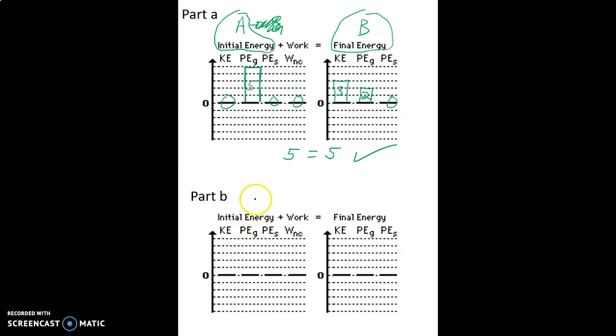So the starting conditions are the same. We're still going from A to C. A is our initial and point C is our final. So point A is still exactly the same. There's no kinetic energy.